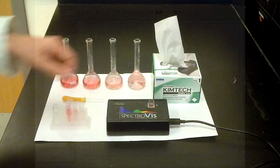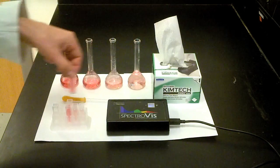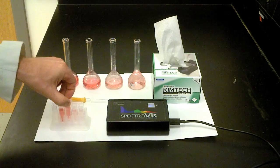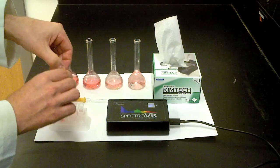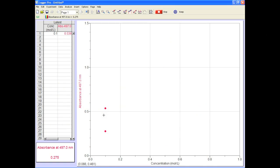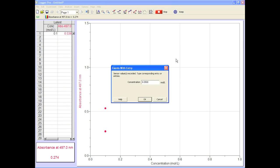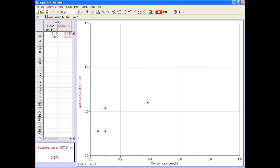Don't press Stop, you're not done yet. Now remove that standard and replace it with the next one in line. Make sure to wipe it down before putting it in the spec. Press Keep and enter the concentration. Check it out, it should be lower in absorbance than your last sample. Excellent.